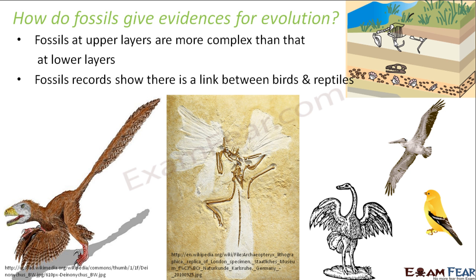This actually showed that birds originated from reptiles. When you look at the feathered dinosaurs, they had feathers only for insulation against cold weather — the feathers gave them warmth. But for modern birds, feathers are used for flight. So the feathers adapted themselves over time for different functions. Fossil records helped us find this missing link between birds and reptiles.